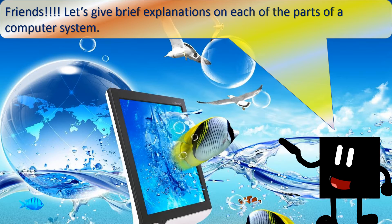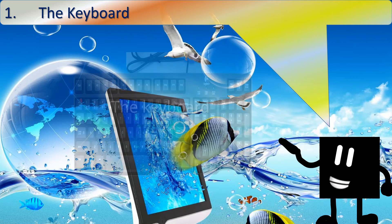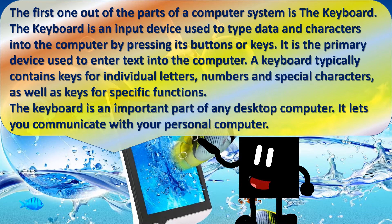Friends, let's give brief explanations on each of the parts of a computer system. The first one is the keyboard. The keyboard is an input device used to type data and characters into the computer by pressing its buttons or keys. It is the primary device used to enter text into the computer. It is an important part of any desktop computer and lets you communicate with your personal computer.